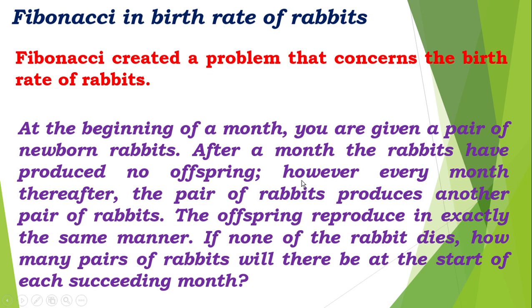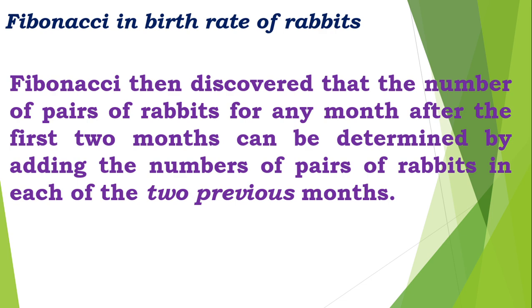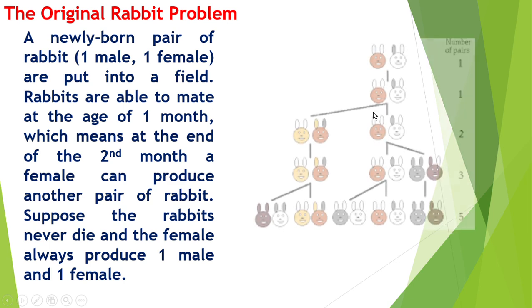Fibonacci created a problem that concerned the birth rate of rabbits. At the beginning of a month you are given a pair of newborn rabbits. After a month the rabbits have produced no offspring. However, every month thereafter, the pair of rabbits produce another pair of rabbits. The offspring will produce in exactly the same manner and none of the rabbits die. How many pairs of rabbits will there be at the start of succeeding months? Fibonacci discovered that the number of pairs of rabbits for any month after the first two months can be determined by adding the numbers of pairs of rabbits in each of the two previous months.